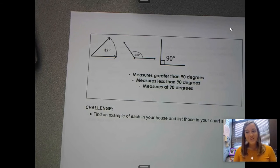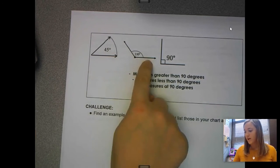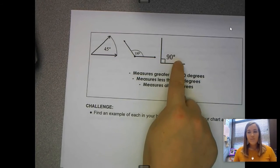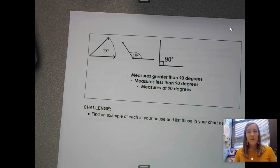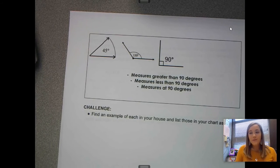Now, my challenge to you, I know that this is only three different angles. My challenge to you is written right here at the bottom. It says to find an example of each of these kinds of angles within your own house, almost like a little scavenger hunt. So if you could come up with one or two examples for each of them, just as a fun little challenge for you and write those in your chart as well.